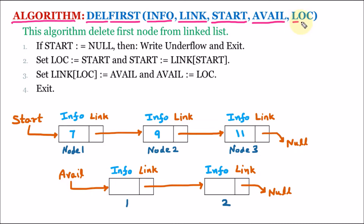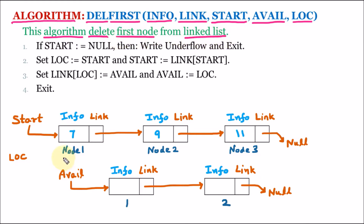Then we have the location variable. Location will contain the address of the node that we want to delete, and we know that in this linked list we want to delete the first node. This algorithm deletes the first node from the linked list — that means we want to delete node 1, which contains the value 7.